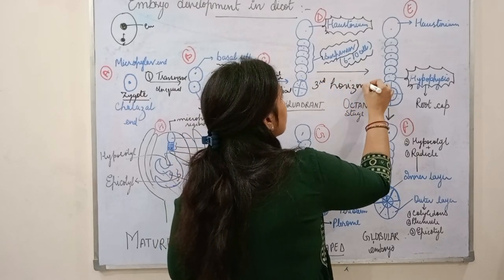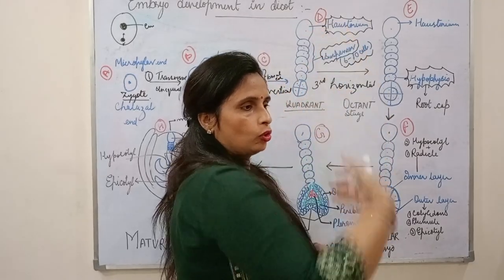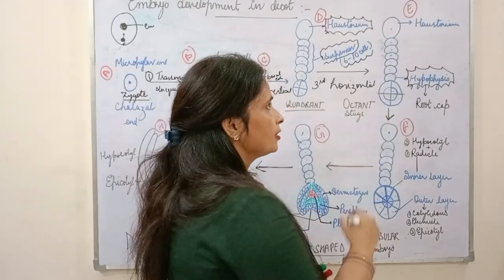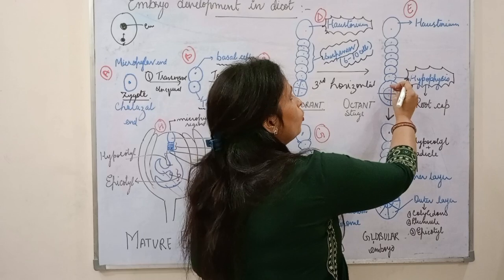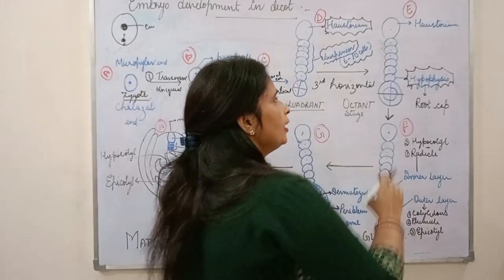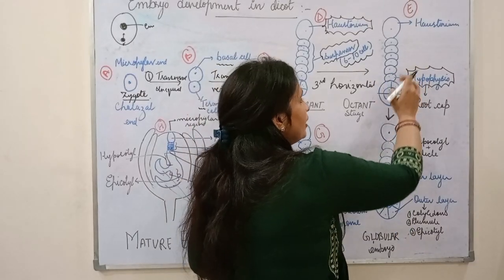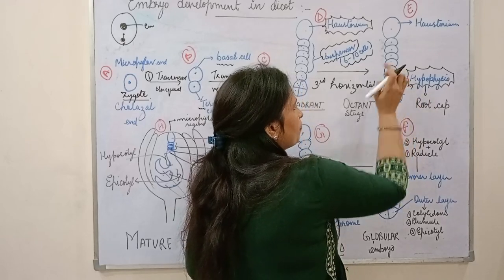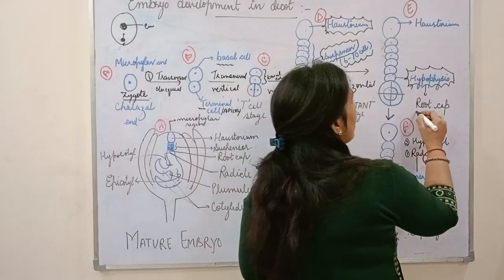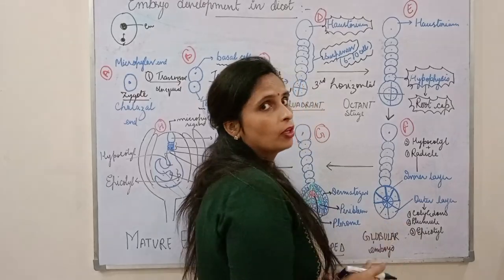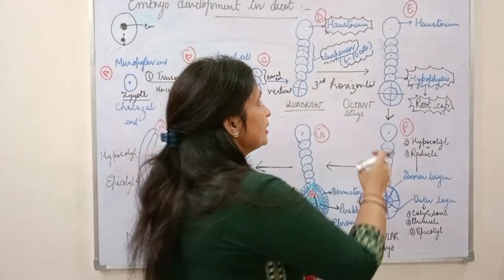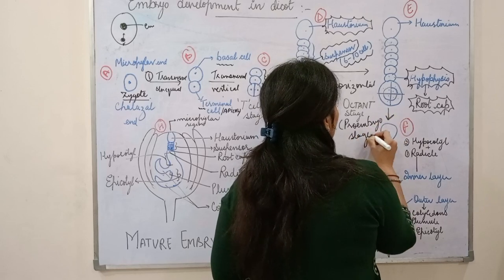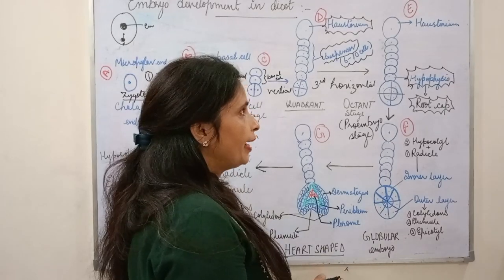That third division is horizontal. Previously there were four cells; after the horizontal division, each cell divides into an inner layer and an outer layer. The hypophysis cell forms the root cap. This stage is called the octant stage or pro-embryo stage — an important stage. In the pro-embryo stage, there are 8 cells.